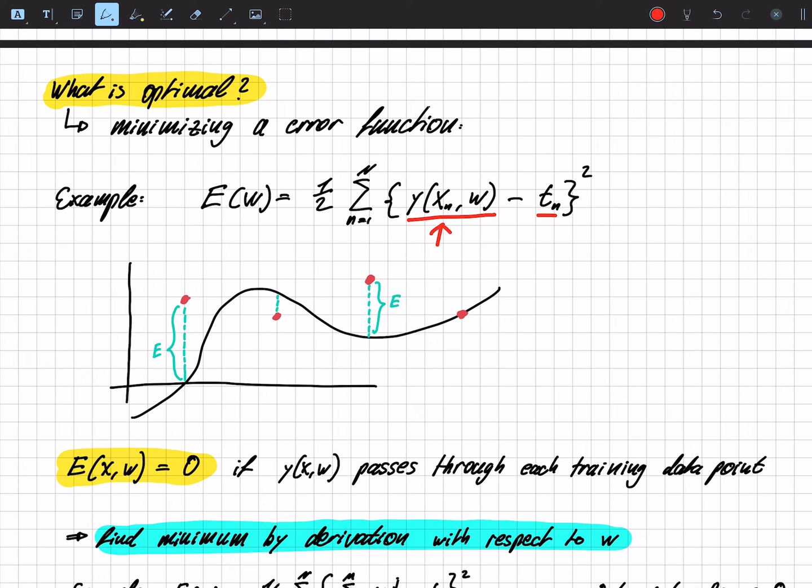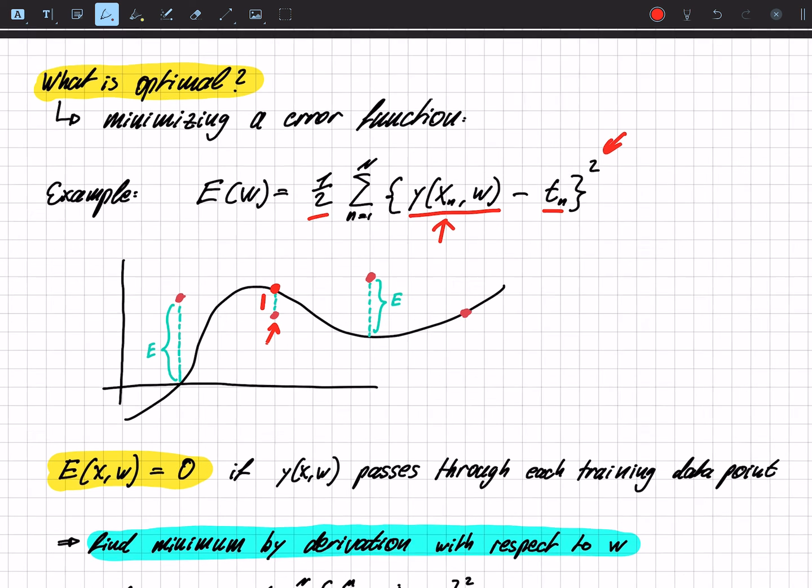So if we input our x here, we get, for example, let's choose this point, we get this output. But the actual target is this one. So we have a difference. And we square this difference and divide it, multiply it by a half. So this is basically, you can imagine this as a square, and we take half of it.